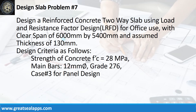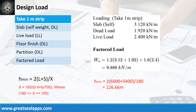Design a reinforced concrete two-way slab using load and resistance factor design for office use with a clear span of 6,000 mm by 5,400 mm and assumed thickness of 130 mm. The uniform load for a 130 mm thick slab is 3.12 kN per meter. An office live load is 2.4 kN per meter. Other dead load like floor finish and partition is 1.92 kN per meter, for a factored load of 9.888 kN per meter.